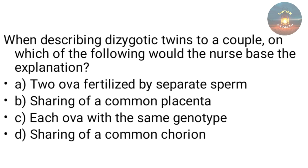When describing dizygotic twins to a couple, which of the following would the nurse base the explanation on — two ova fertilized by separate sperm, sharing of a common placenta, each ovum with the same genotype, or sharing of a common chorion? The answer is two ova fertilized by separate sperm, because there are two zygotes — that is why it is called dizygotic.